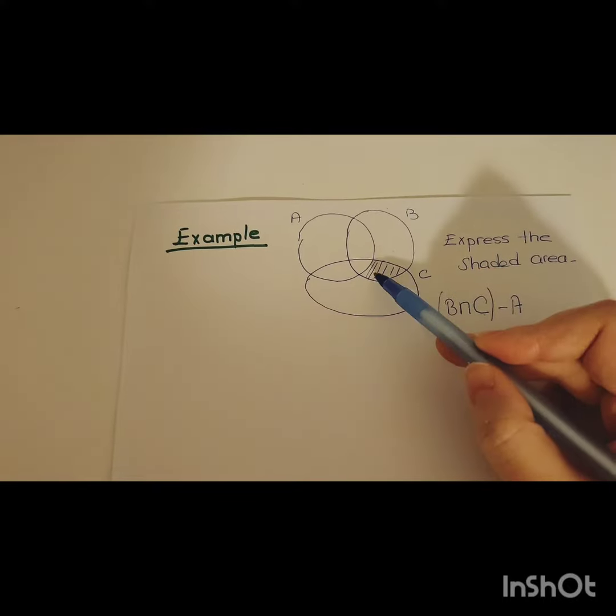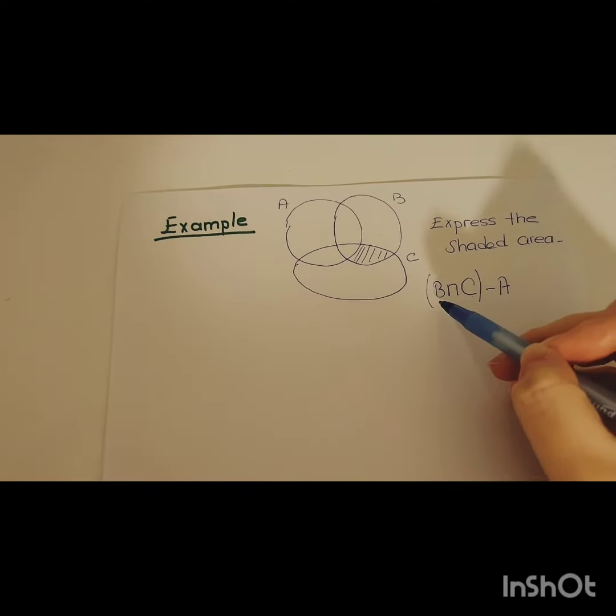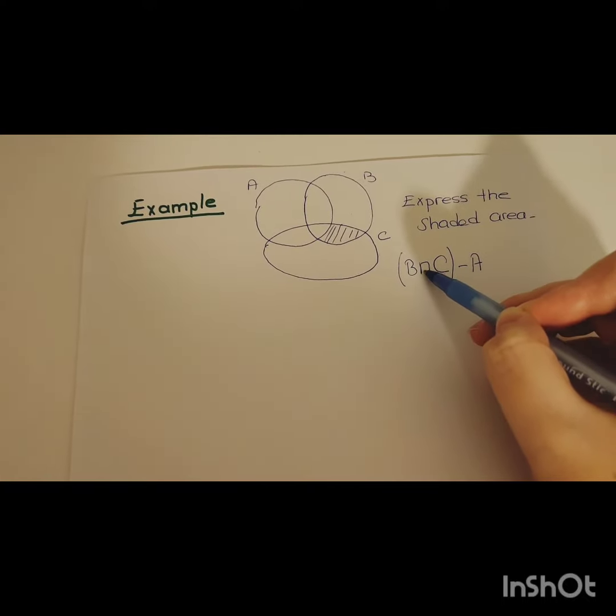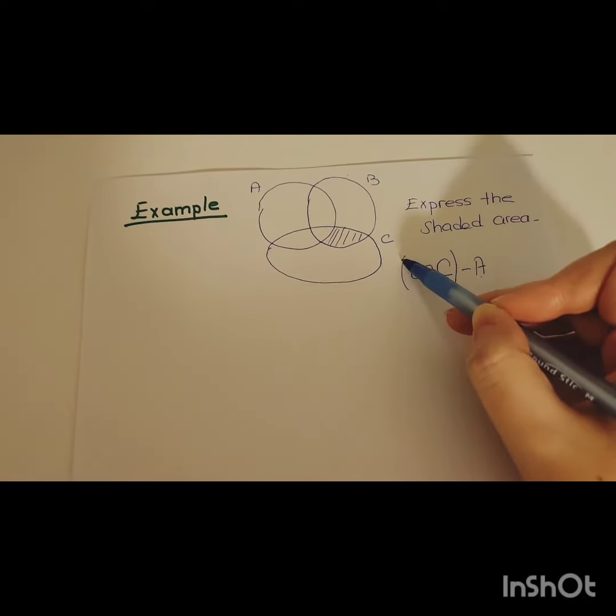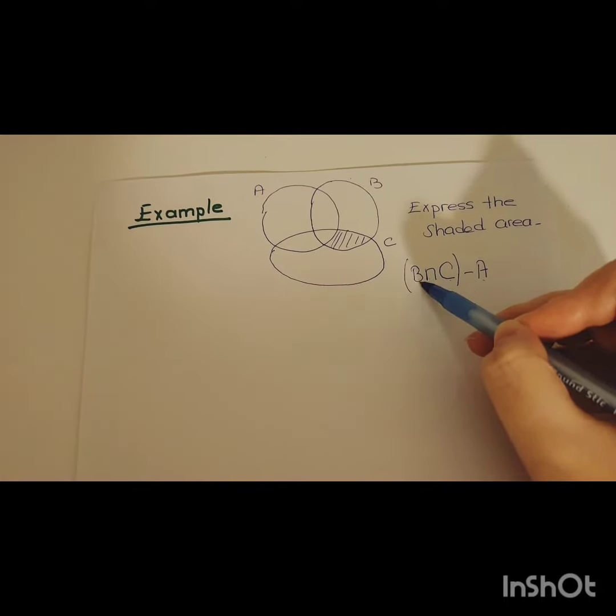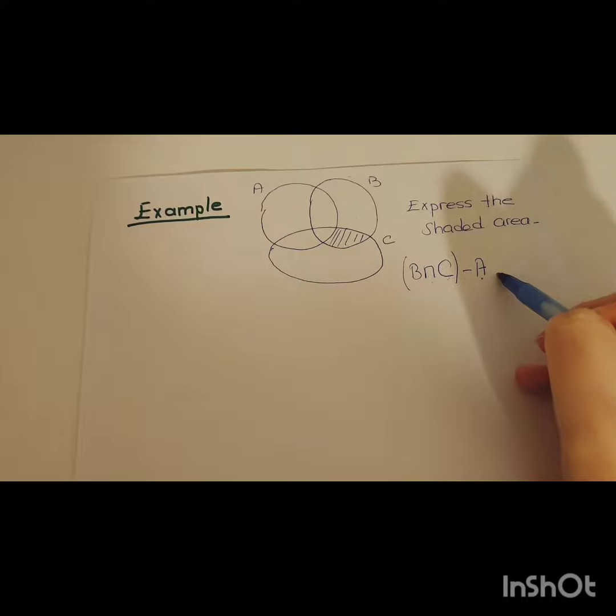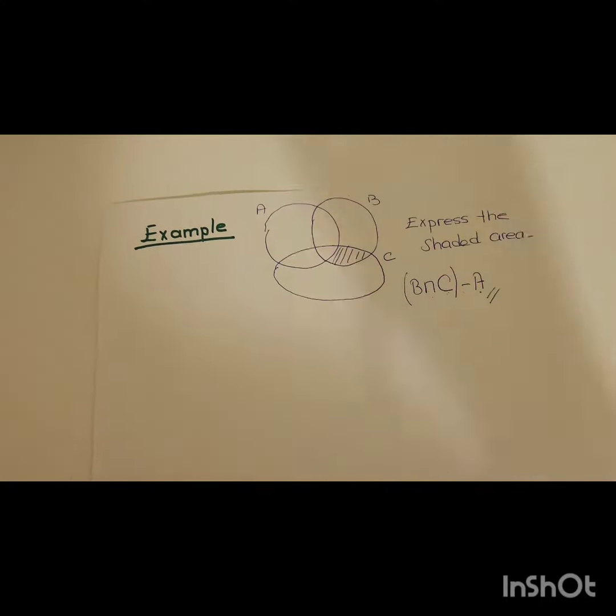So the shaded area is B intersection C and their difference from A. The difference of B intersection C from A. And this is our answer.